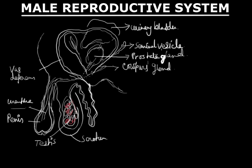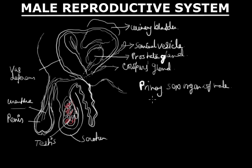Today, we are going to start the male reproductive system. The primary reproductive organ or primary sex organ of males is a pair of testes, which are enclosed in a skin pouch called the scrotum, suspended outside the body below the abdominal cavity.